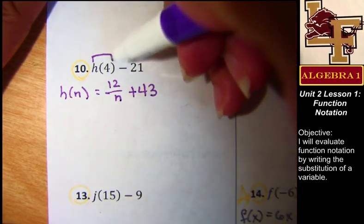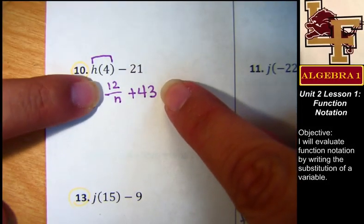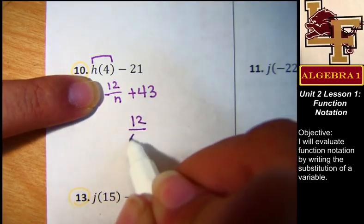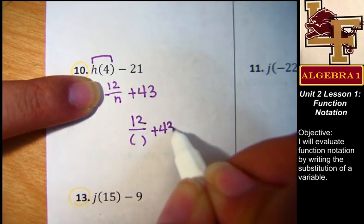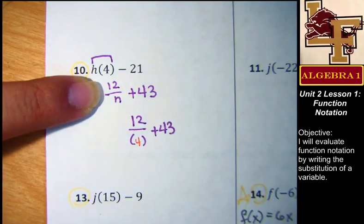Here is my function, and so I'm going to replace h of 4 with this stuff, but everywhere I see an n, I'm going to place a 4.